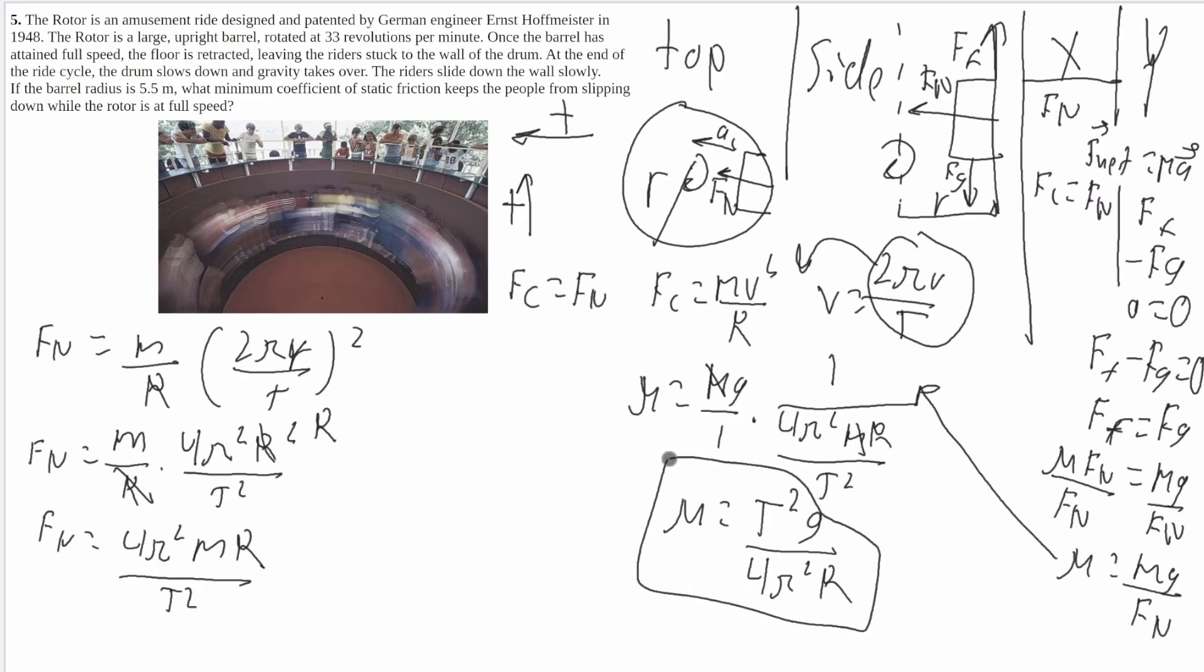We're not quite done yet, because we have to do one conversion. It tells us that it's rotated at 33 revolutions per minute. And this t is period where it's in seconds per revolution. So we have to convert first from revolutions per minute to revolutions per second, and then from revolutions per second to seconds per revolution. So I'm just going to make myself a little area here to do this conversion.